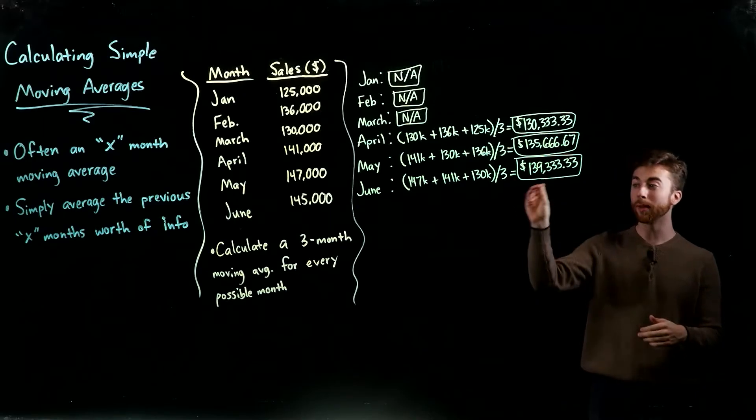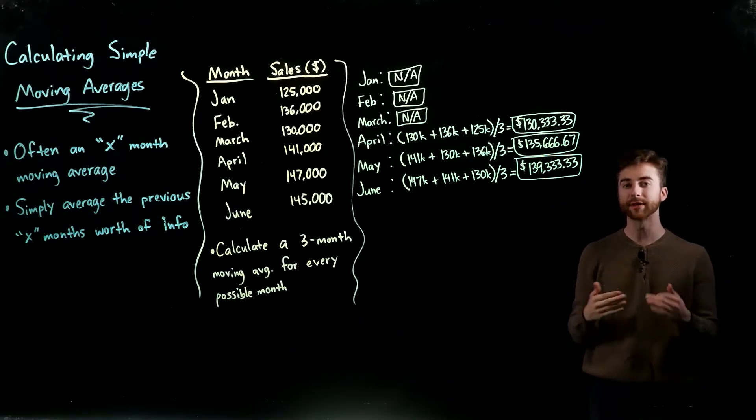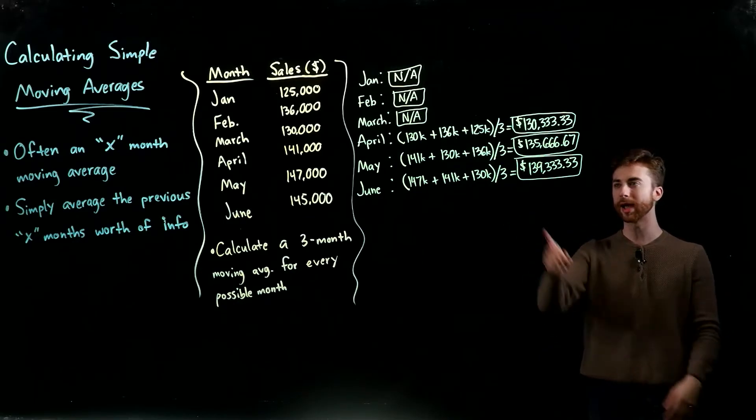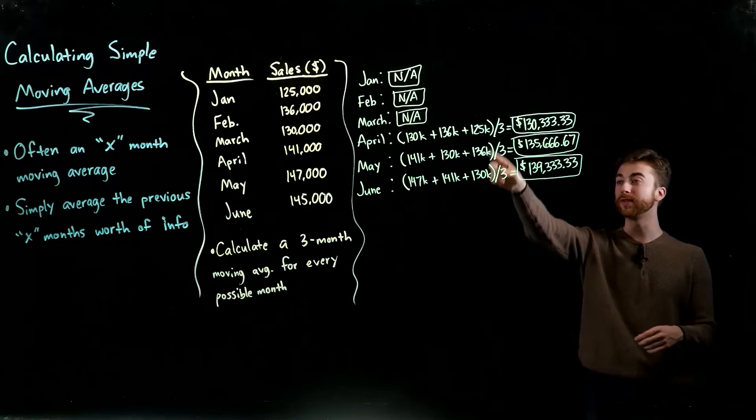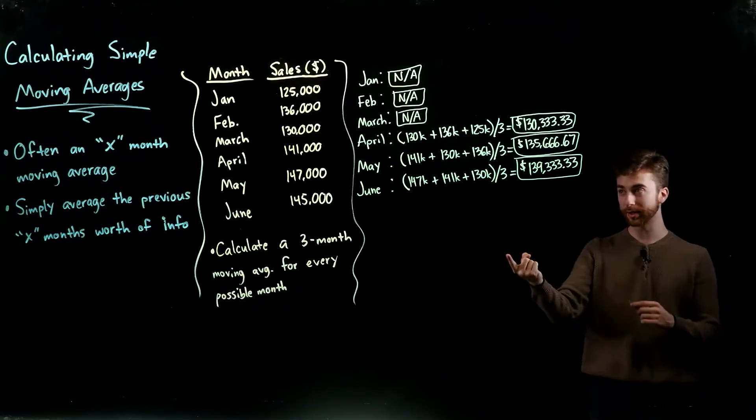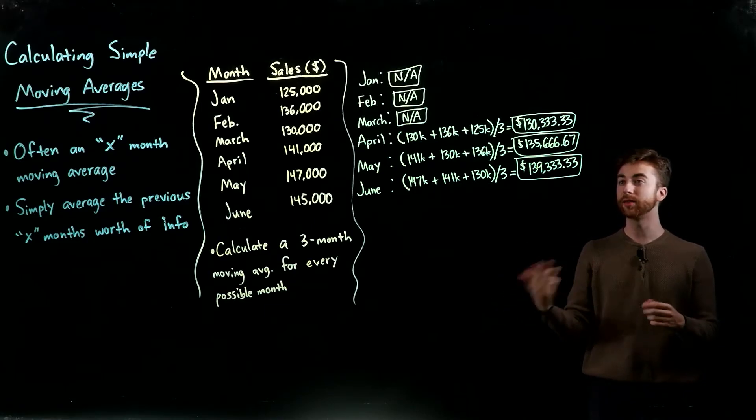But you can see that April, May, and June—we do have sales figures for the previous three months. So it's literally as simple as looking at the previous three months. Let's take April into account: we have April and we look at the previous three months. We add together—simply average them—the 130,000 from March, the 136,000 from February, and the 125,000 from January. Add them all up, divide them by three, just taking the average of the three months.